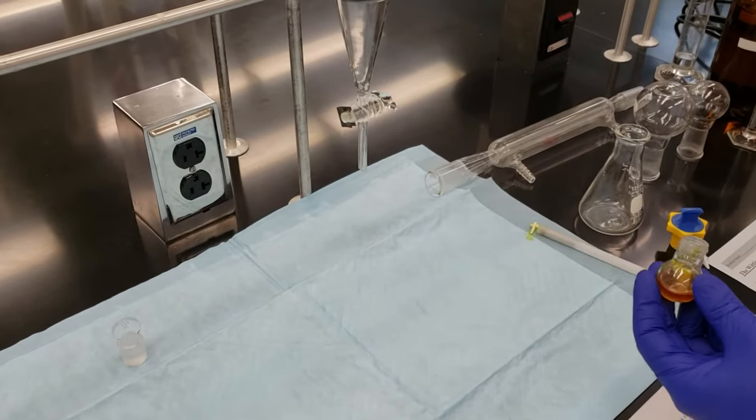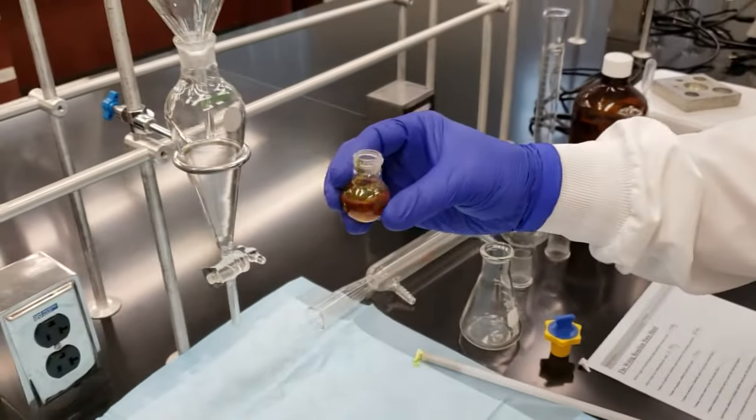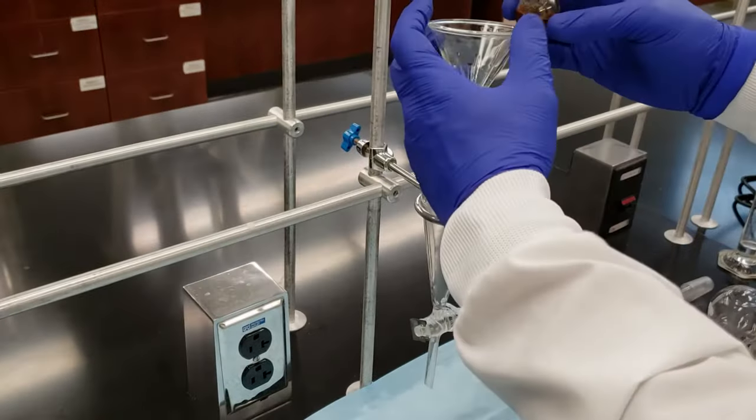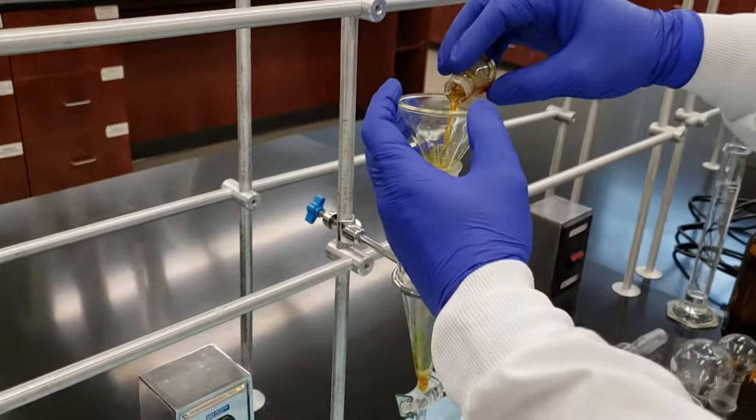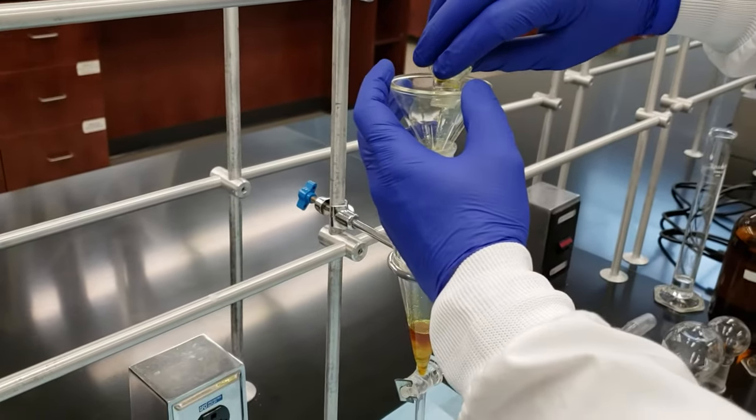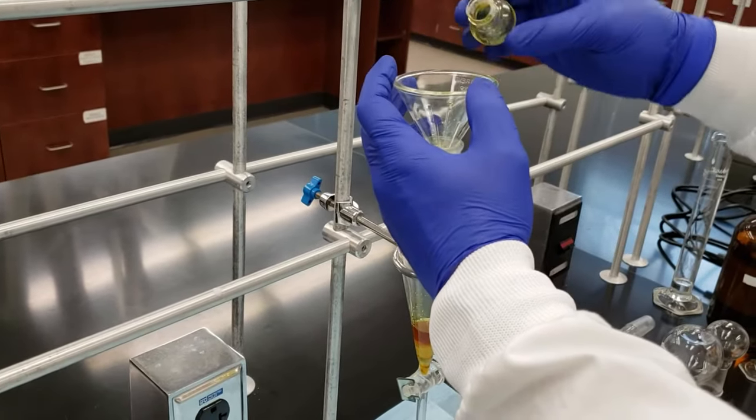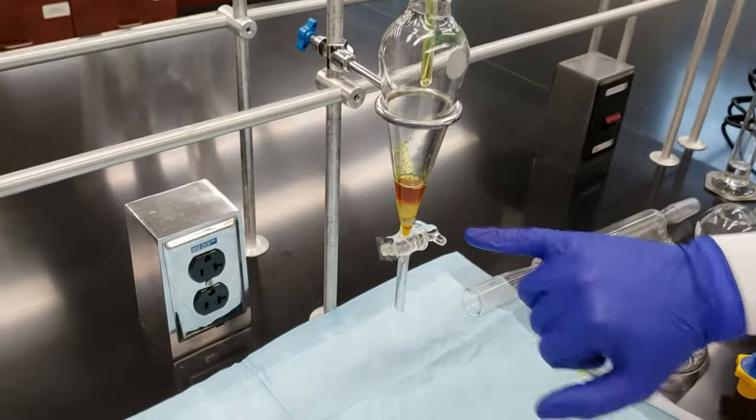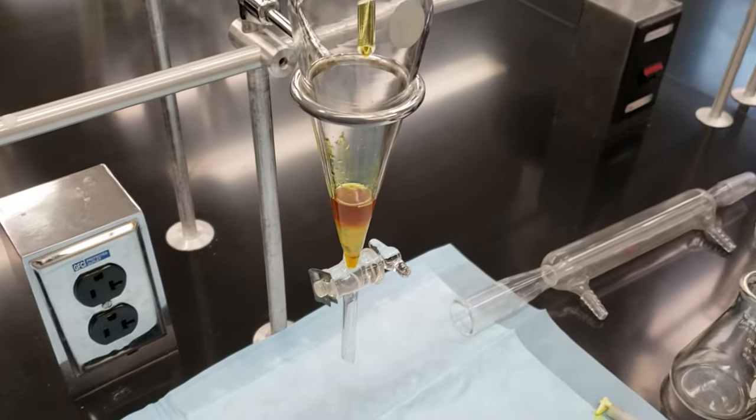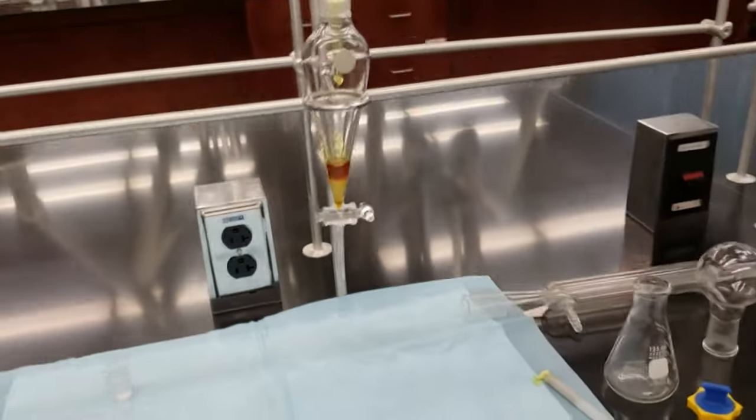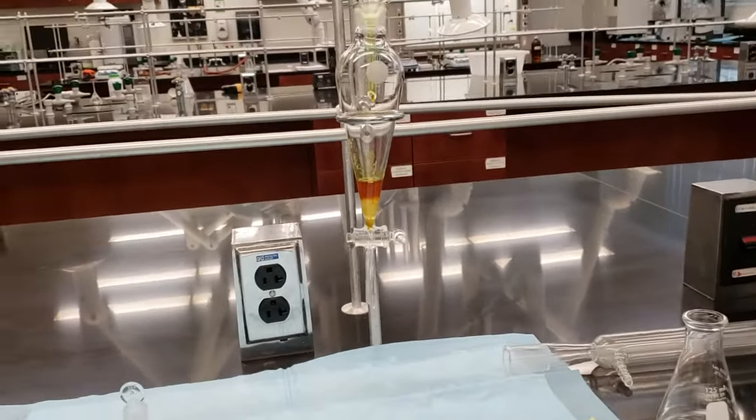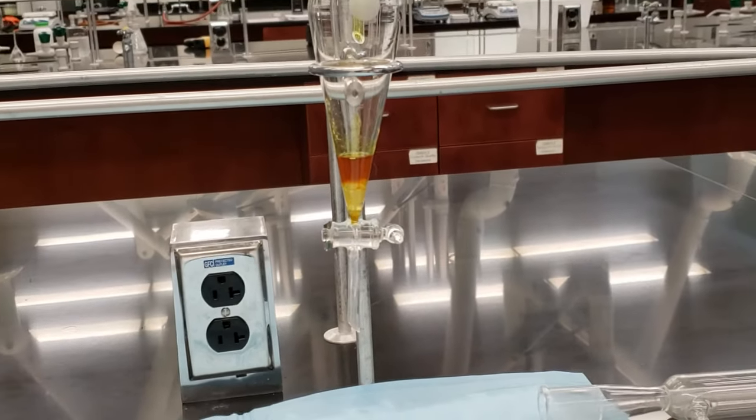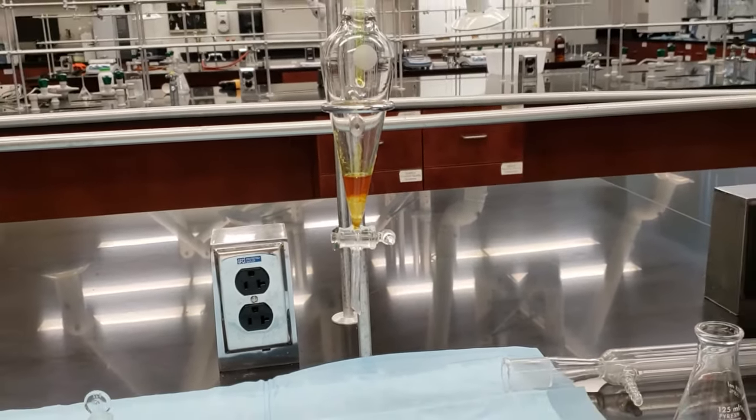And then we'll pour the contents of our reaction vessel into our separatory funnel. We've got to make sure that it's closed first. And we want to take a close look here. We see our layer separation. It's not perfect right now, but it's going to get a little bit better in a minute. So we've got our two layers. We're going to do two rinsings of our reaction vessel that will add to the volume of each one of those layers.